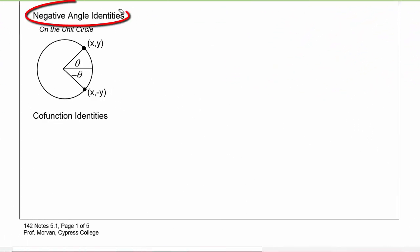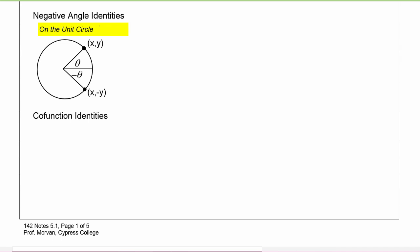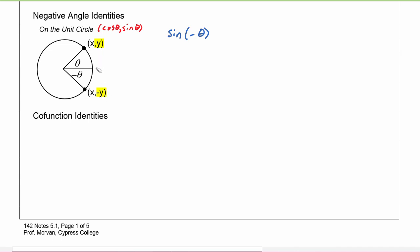Next up we have the negative angle identities. To help you see the relationships between these identities, remember the unit circle — on the unit circle, x is the cosine of theta and y is the sine of theta. When we have sine of negative theta, the y value of theta and the y value of negative theta are opposites of each other. So that means the sine of negative theta is going to be the opposite of sine theta.